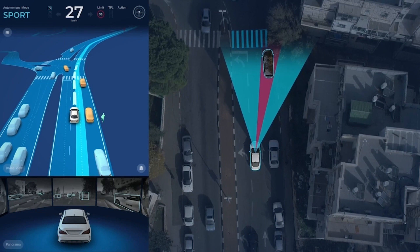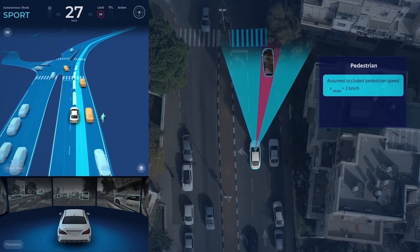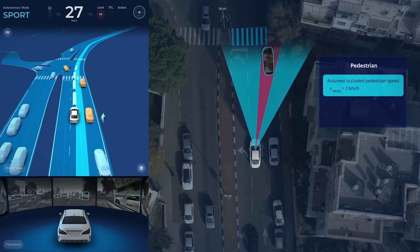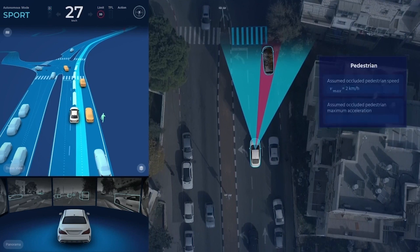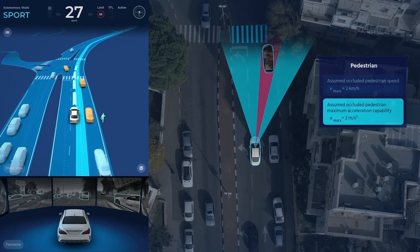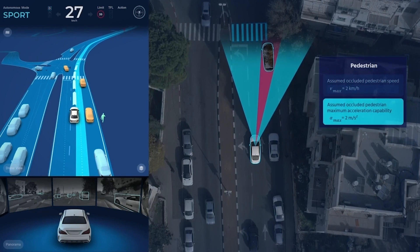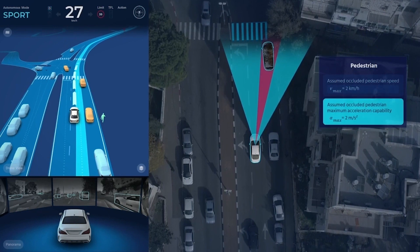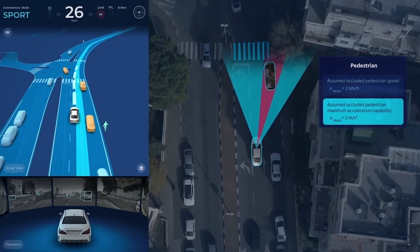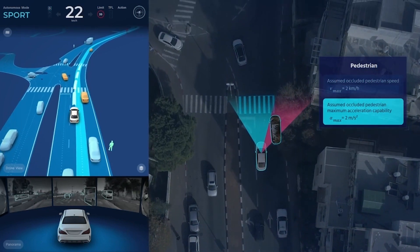Reasonable worst-case assumptions for pedestrians at a crosswalk are 2 km/h for their maximum speed and 2 m/s² for their maximum acceleration. The AV begins decelerating accordingly.